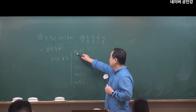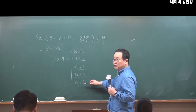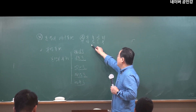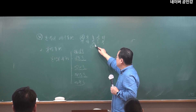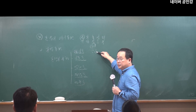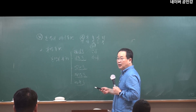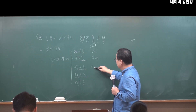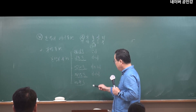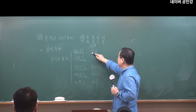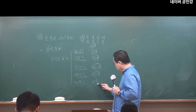평서문, 의문문, 감탄문, 명령문, 청유문이 있습니다. '가다'를 통해서 보면, 평서문은 '간다', 의문문은 '가느냐', 감탄문은 '가는구나', 명령문은 '가거라', 청유문은 '가자'가 됩니다.